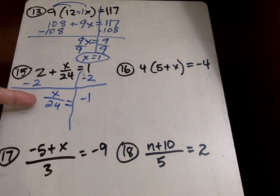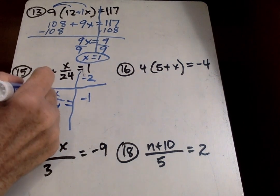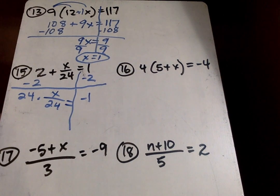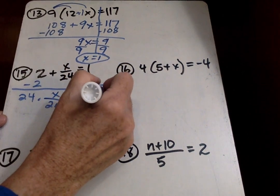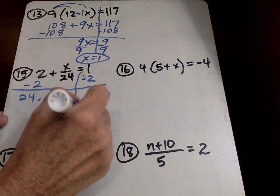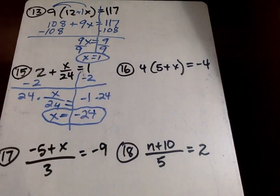Now it's divide by 24. So I do the inverse operation times by 24. Whatever I do over here, I do over there on the other side. And you're done.